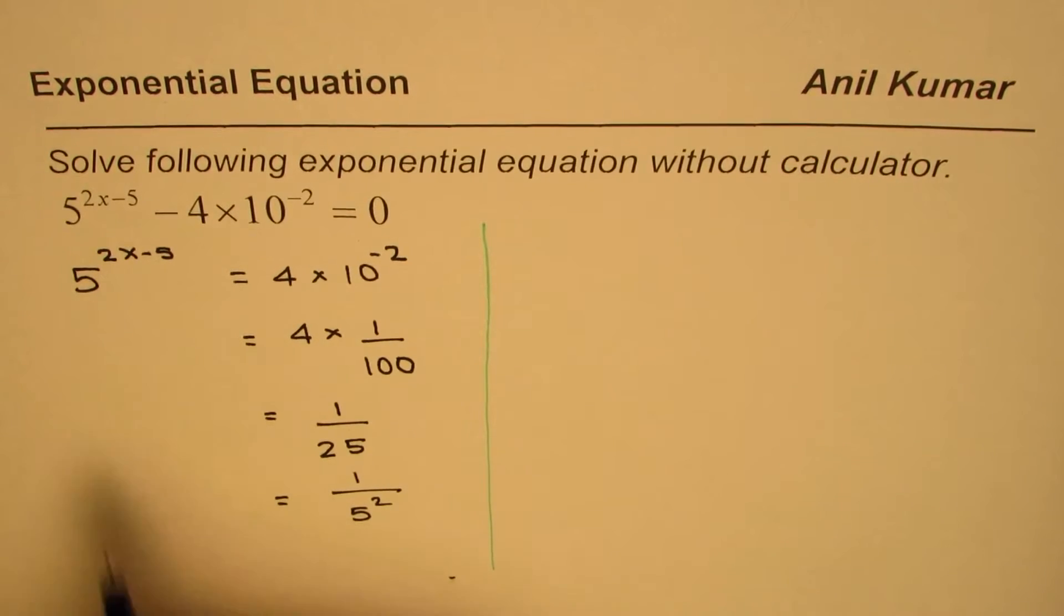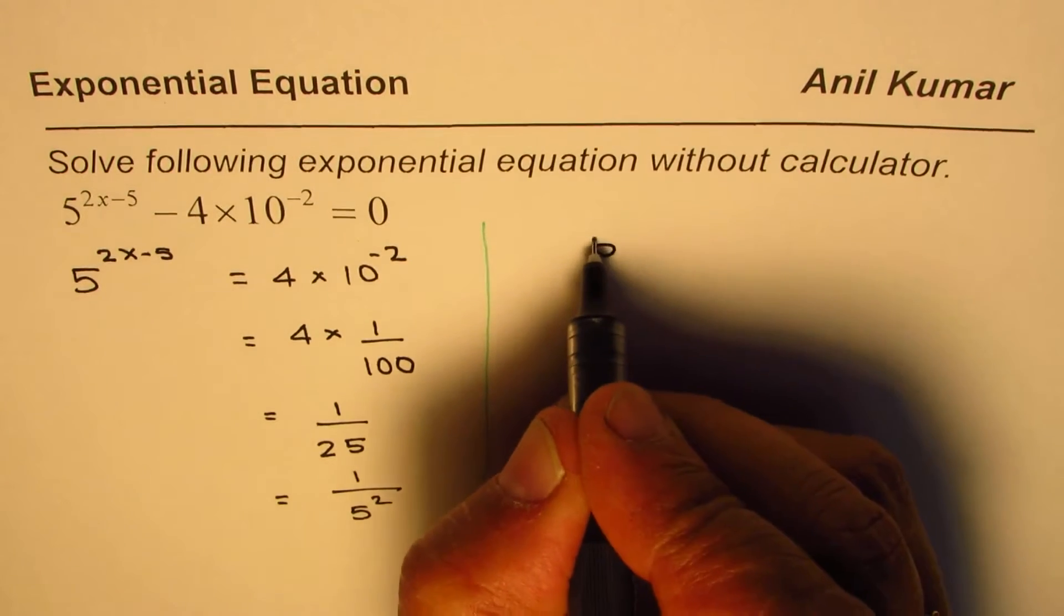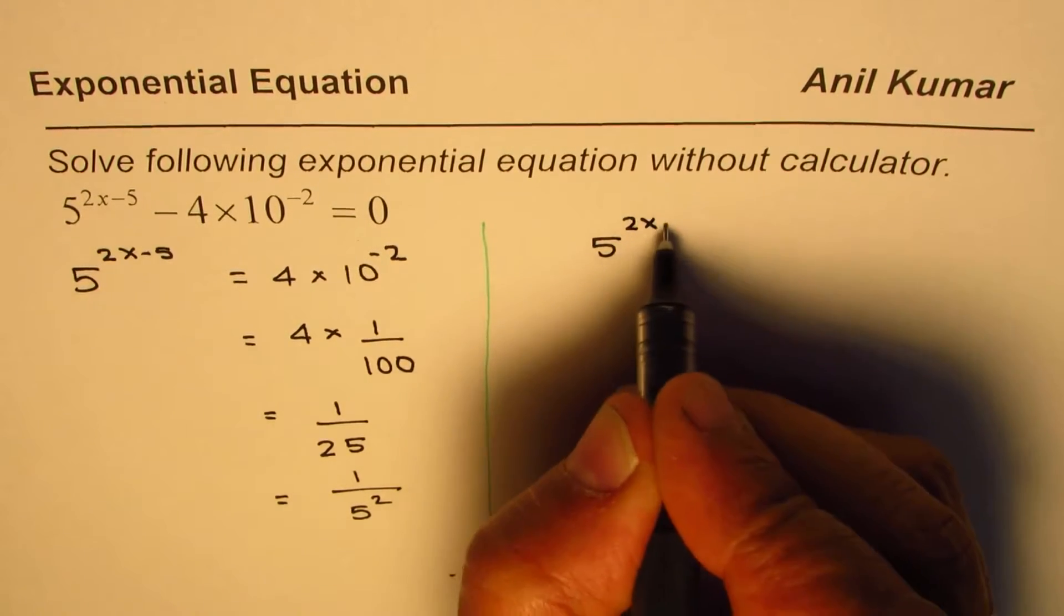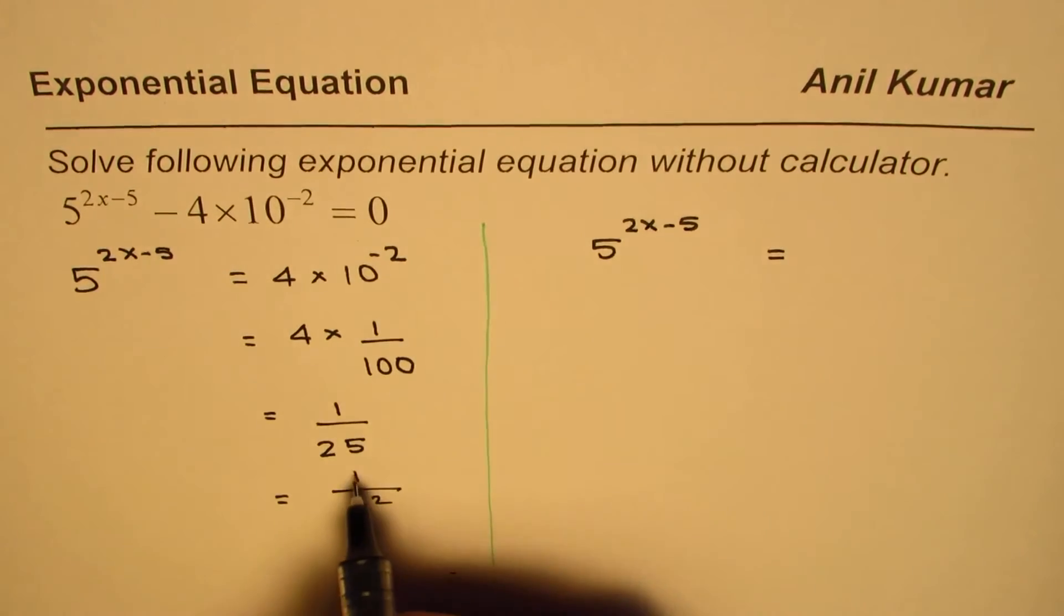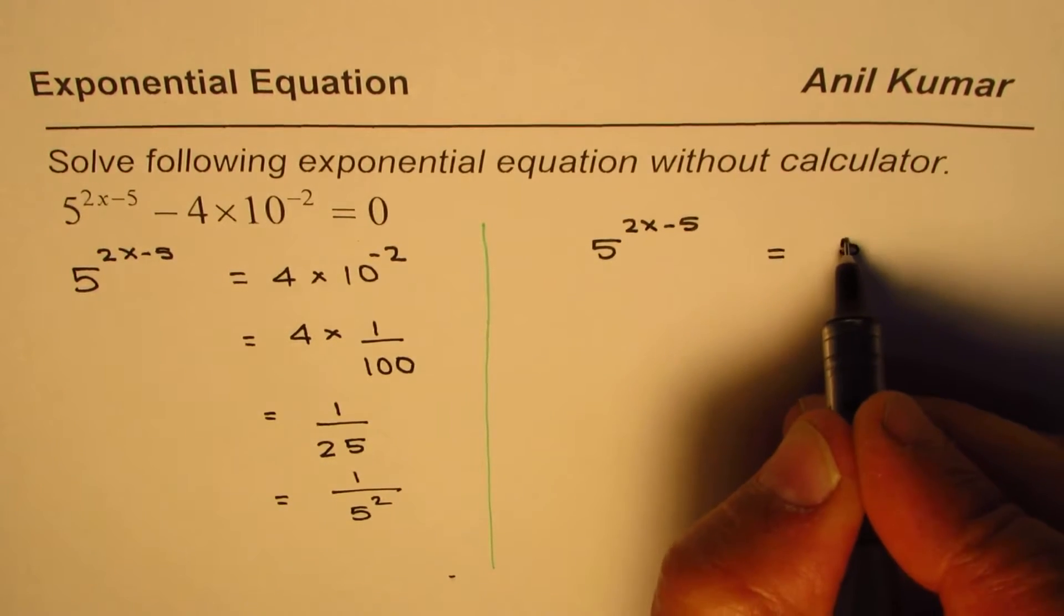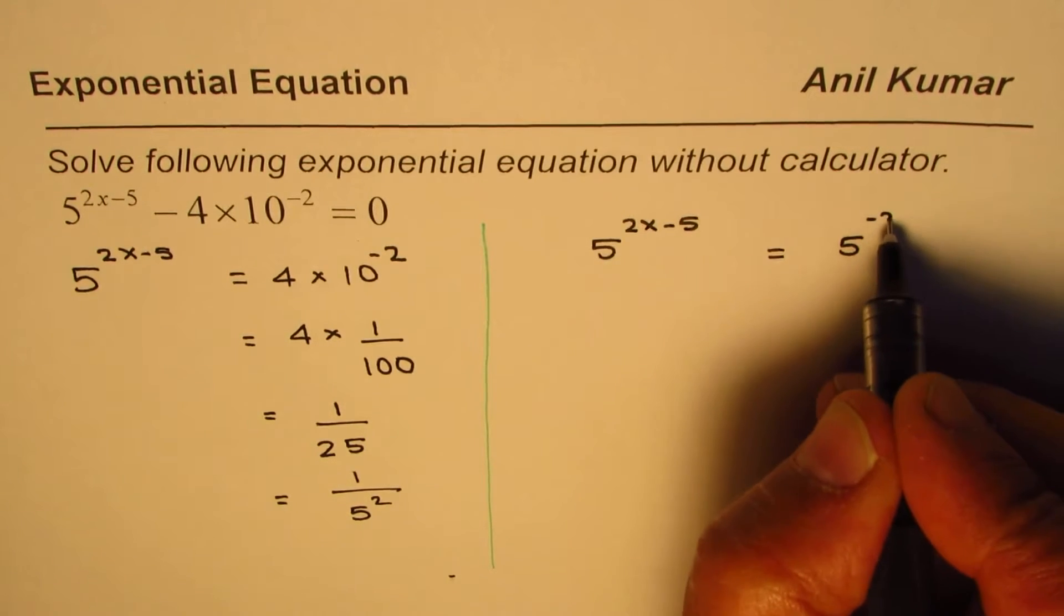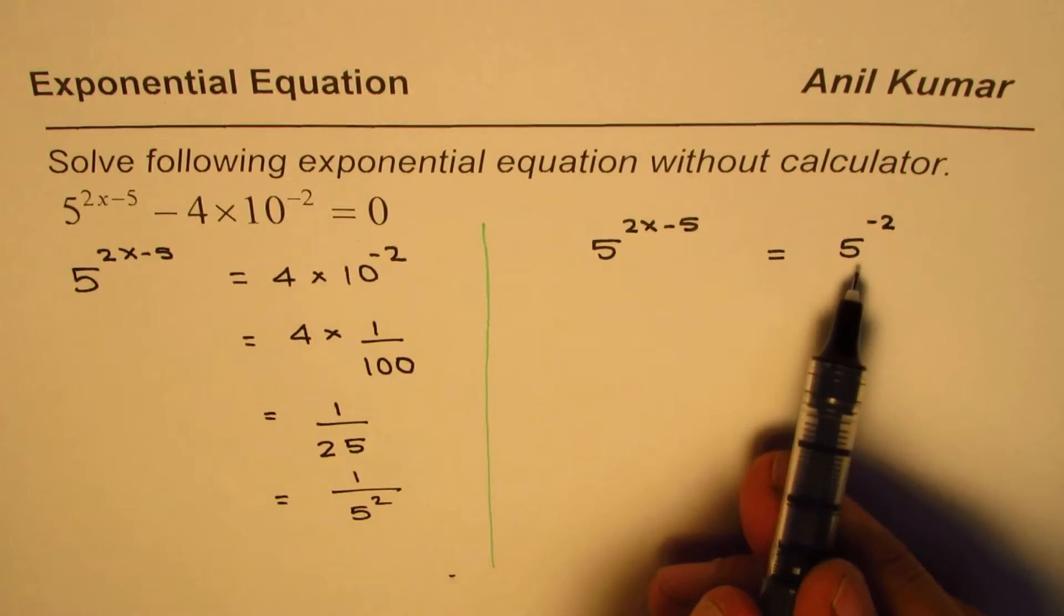What do we have? We have 5^(2x-5) = 1/5^2, which could be written as 5^(-2). Since we have the same base, we can equate the exponents. So the exponents 2x-5 should be equal to -2.